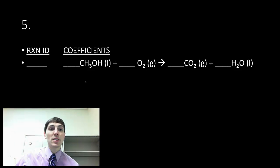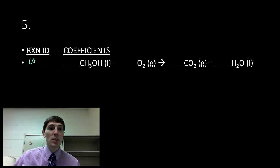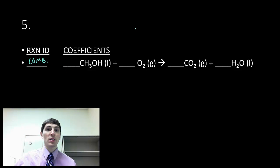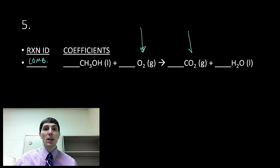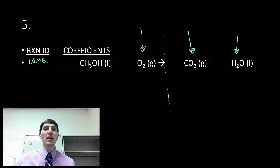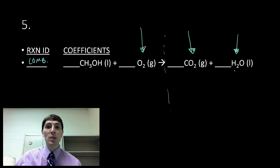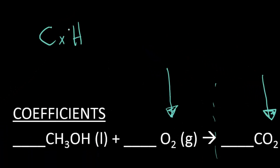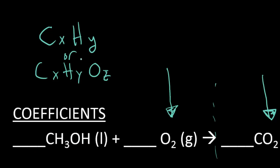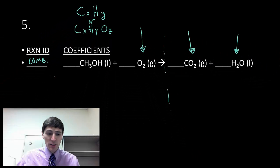Next example — the last one — is a combustion reaction. A quick note on combustion reactions: they're always going to take place in the presence of oxygen, and they're always going to yield carbon dioxide and H2O. You'll see oxygen as a reactant and carbon dioxide and water as products in every combustion reaction. Combustion reactions always involve some kind of hydrocarbon — some carbon, usually paired with some number of hydrogen, and sometimes also some oxygen. This one has carbon, hydrogen, and oxygen, so it's a hydrocarbon.